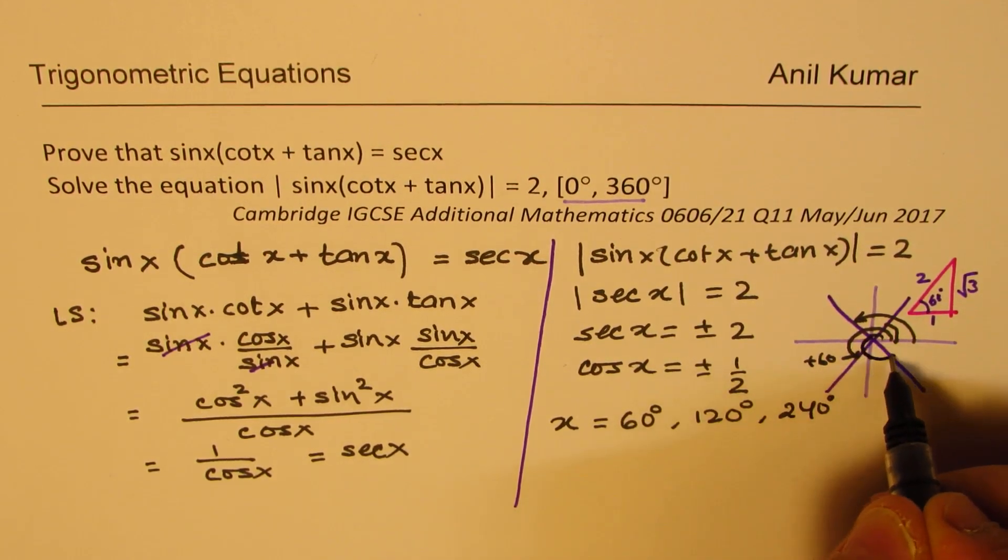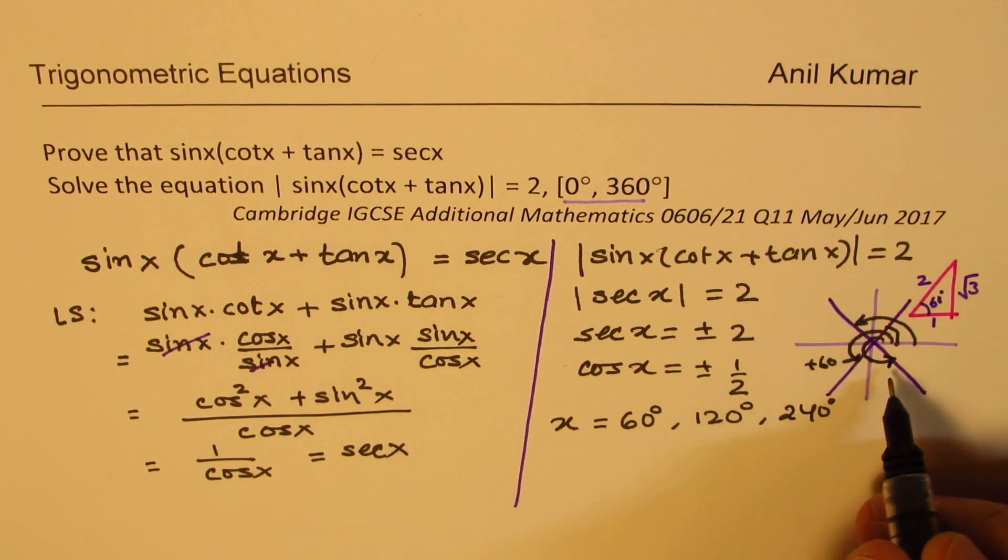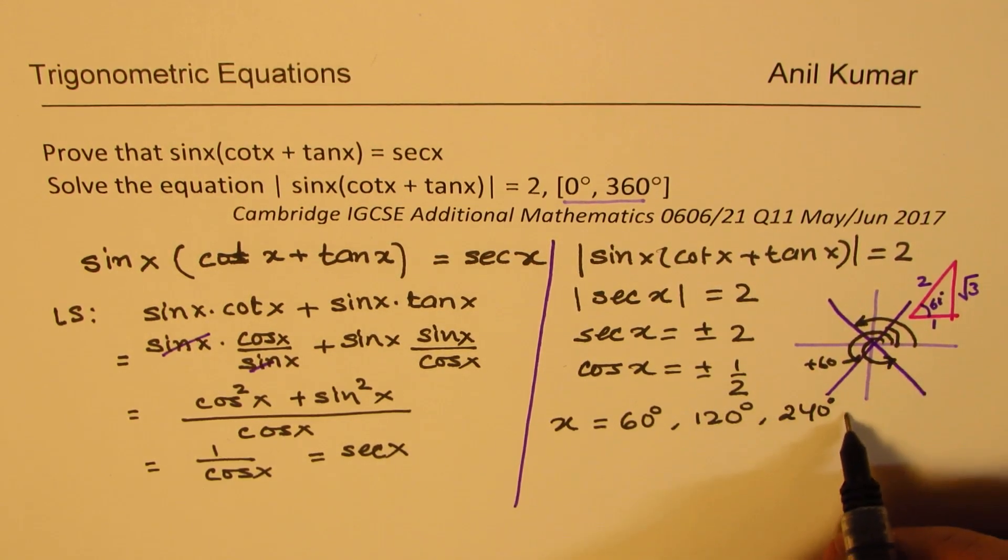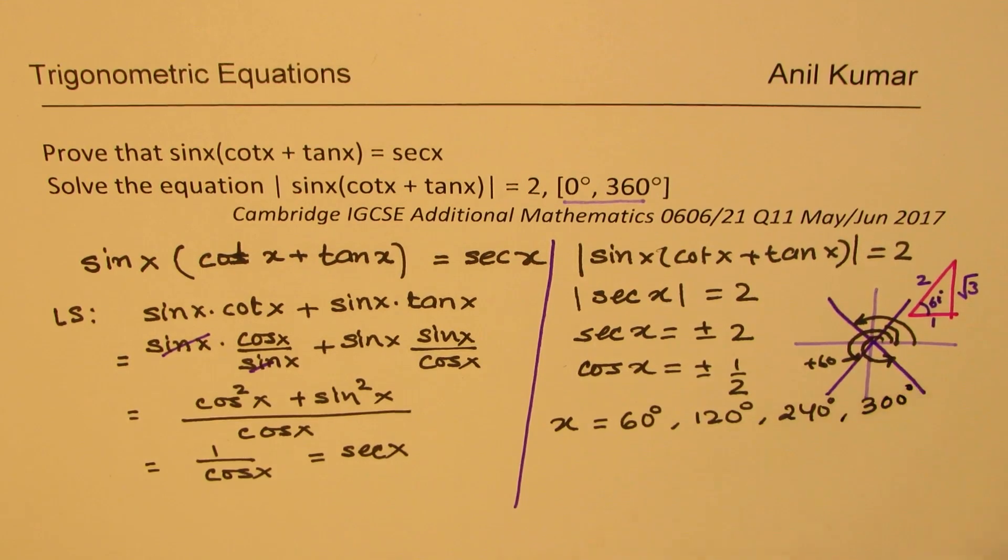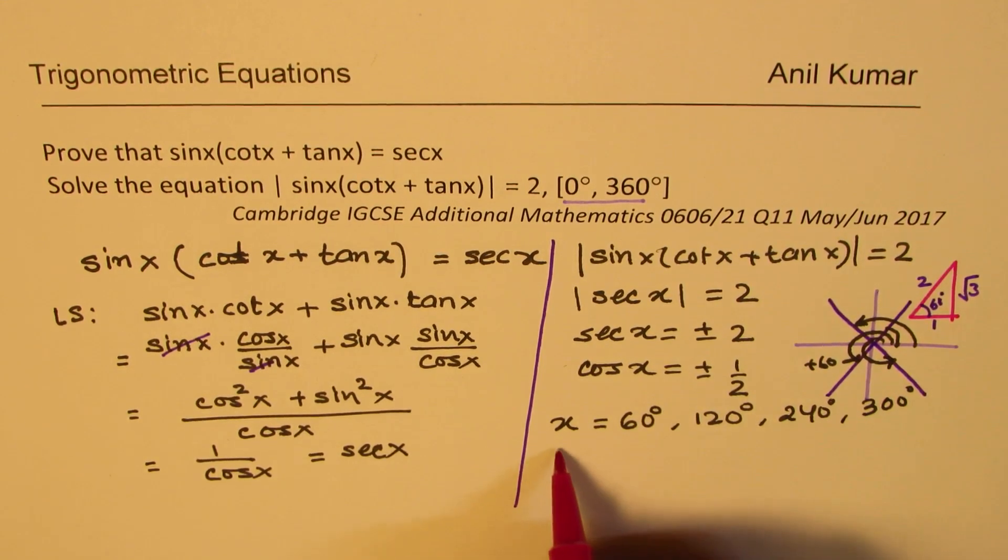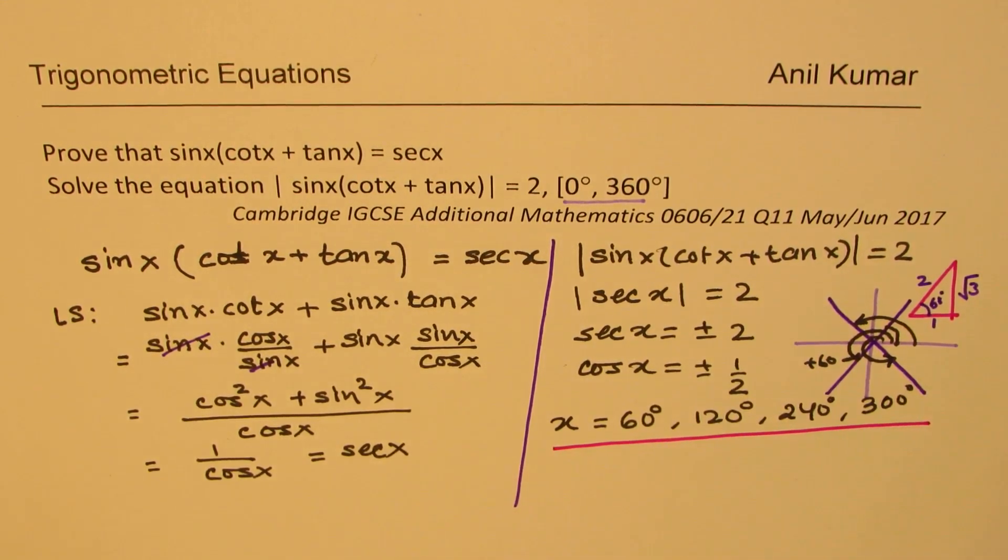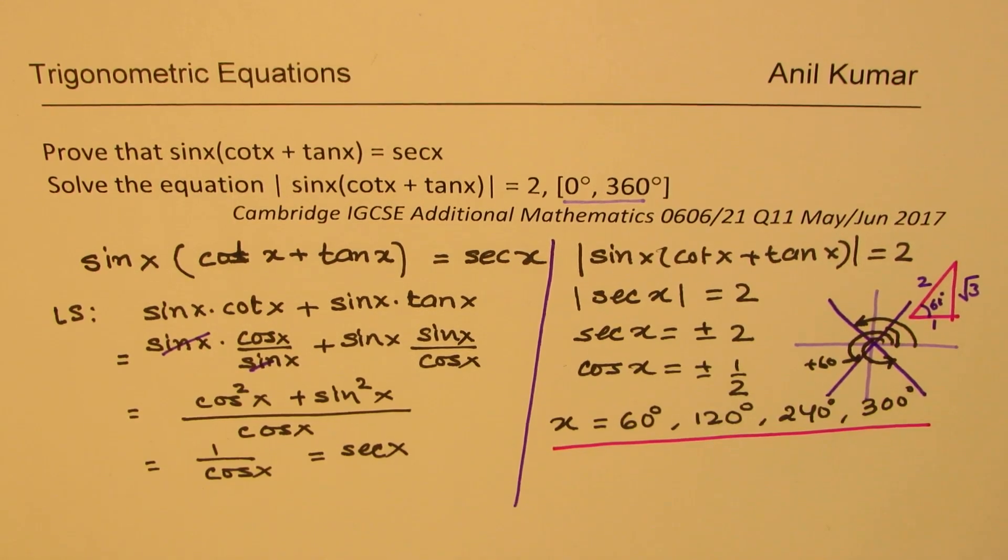So that gives us 300 degrees. So for this question, we have 4 solutions, which are 60 degrees, 120 degrees, 240 degrees and 300 degrees.